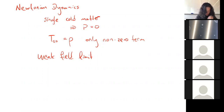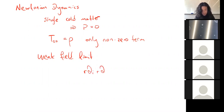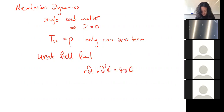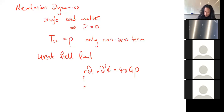So ∂ᵢ∂ᵢ φ equals 4πGρ. This looks a little convoluted because I want to keep note of the subscript R to remind ourselves that this is in static space. This is not the same as when we move into expanding space.